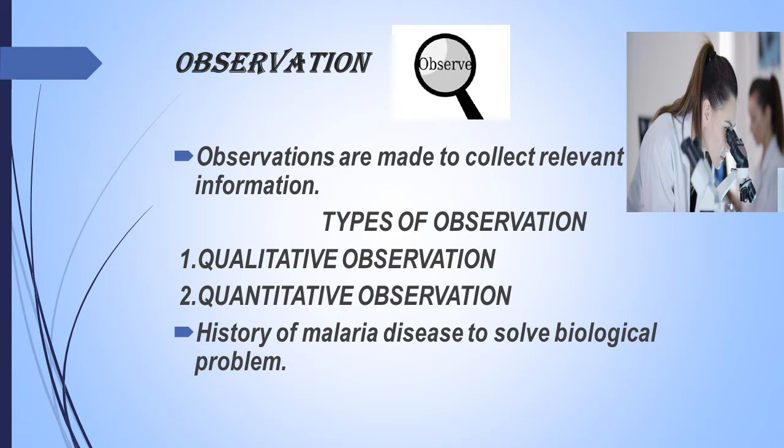Qualitative observation is done by using our senses like vision, smell, taste, touch and hearing. This method gives information about quality. For example, that the color of flower is red. Second type of observation is quantitative observation, in which we use scientific instruments like meter road and microscope. It gives information about quantity.